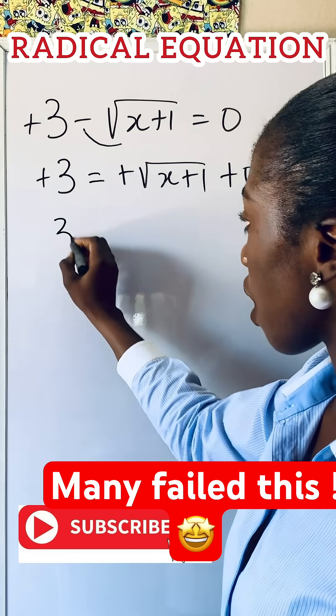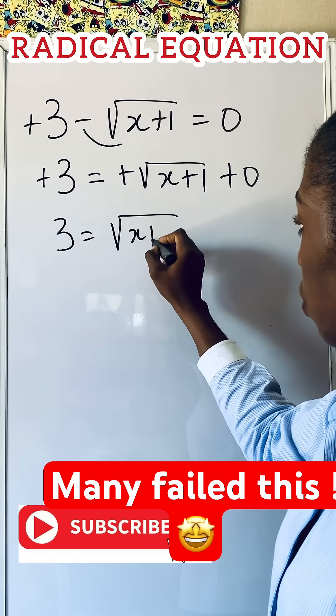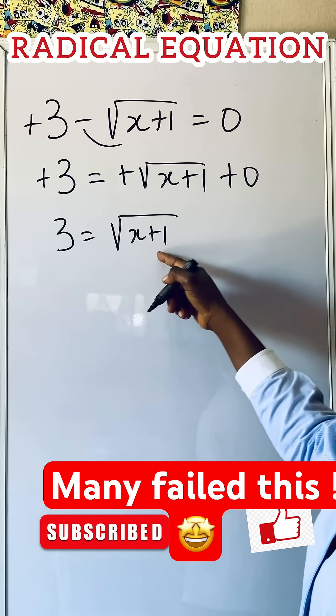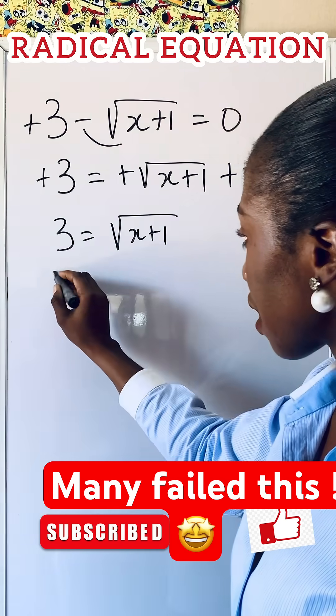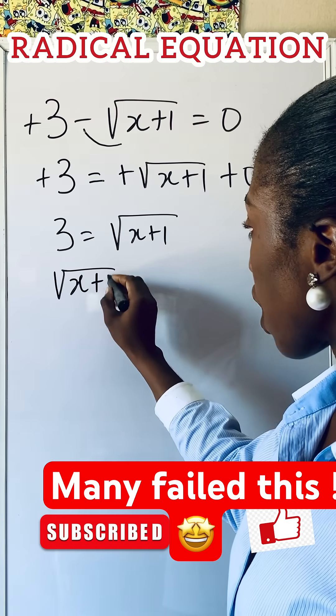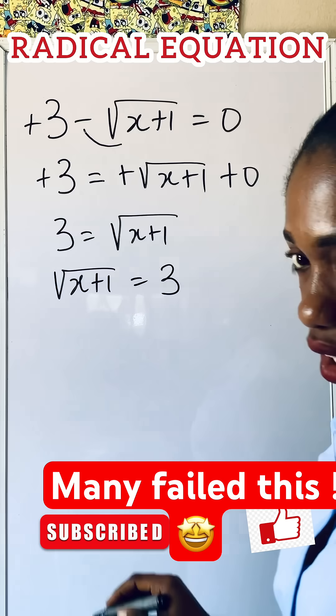So we are going to have 3 is equal to root of x plus 1. If you add 0, it still gives you back this. So we can write this to be root of x plus 1 is equal to 3.